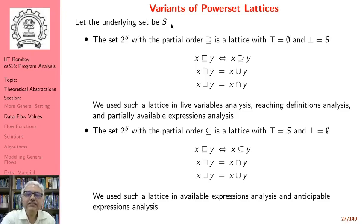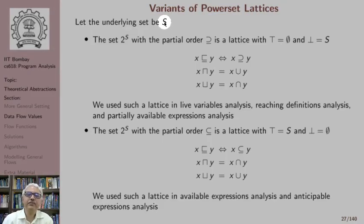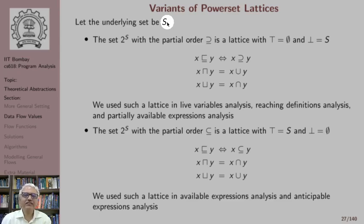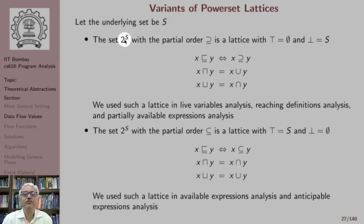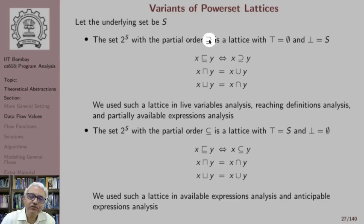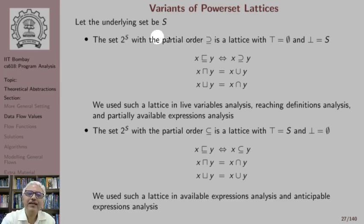Let us consider the underlying set S. This could be a set of expressions, a set of definitions, or a set of variables. Regardless of what elements this set contains, we can still construct a power set lattice by denoting the power set of S as 2 raised to S. This power set is itself a set, and we define a partial order on it. The first partial order we choose is the superset relation, so the set 2 raised to S with the superset partial order is a lattice.